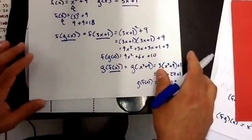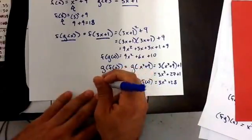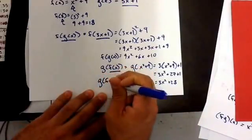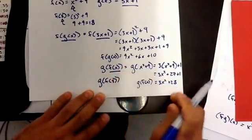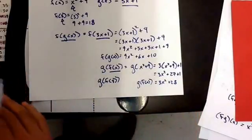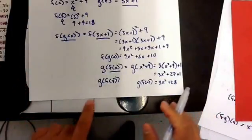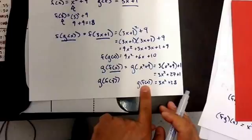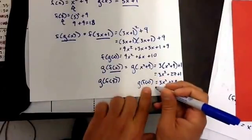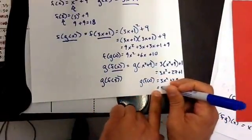So now, how do we make it more difficult? We put a value in there. We say g(f(3)). So what we're doing here is we're replacing the x with a 3. Well, we already know what g(f(x)) is. So g(f(3)) is replacing the x in this equation with 3.